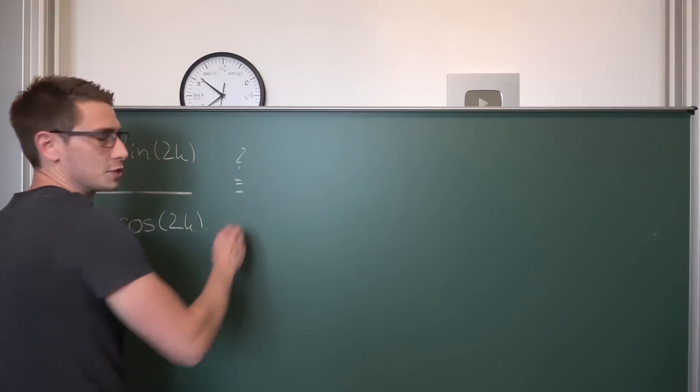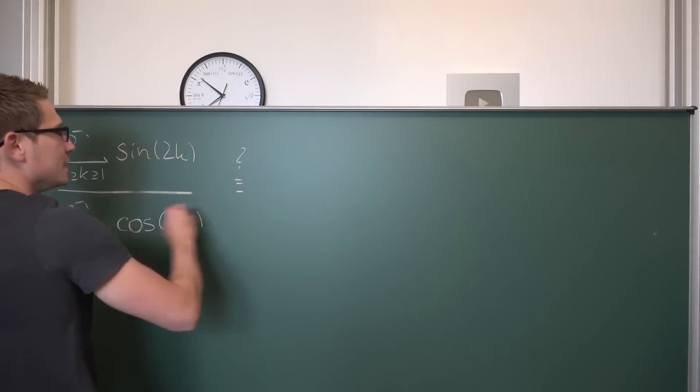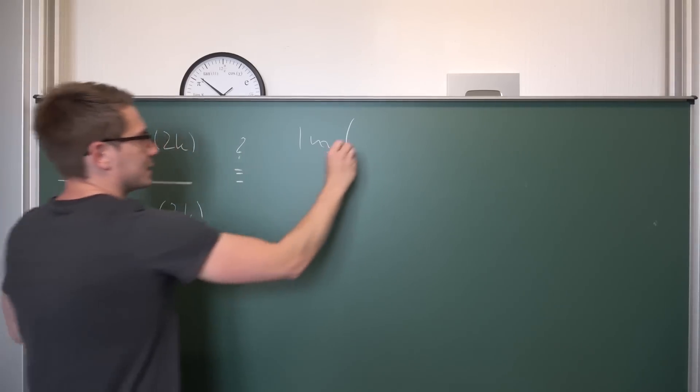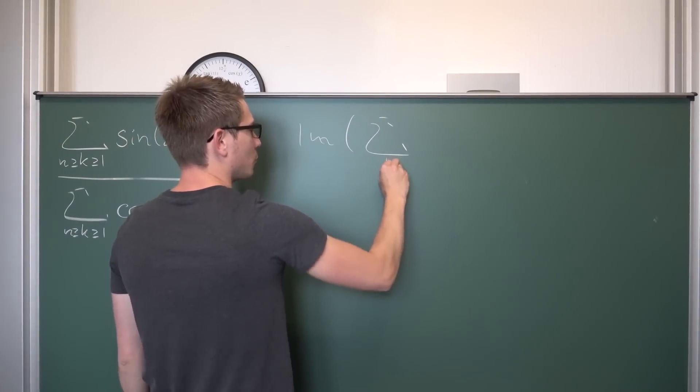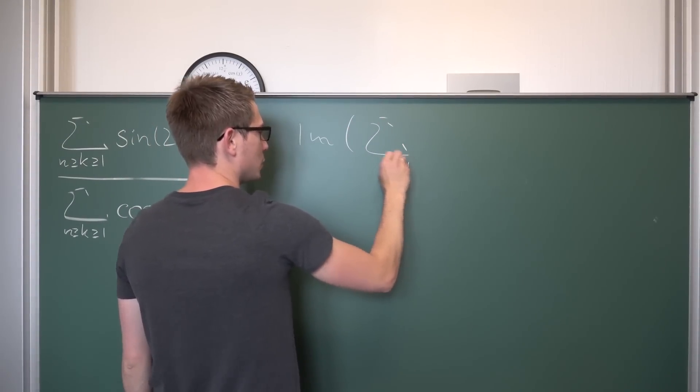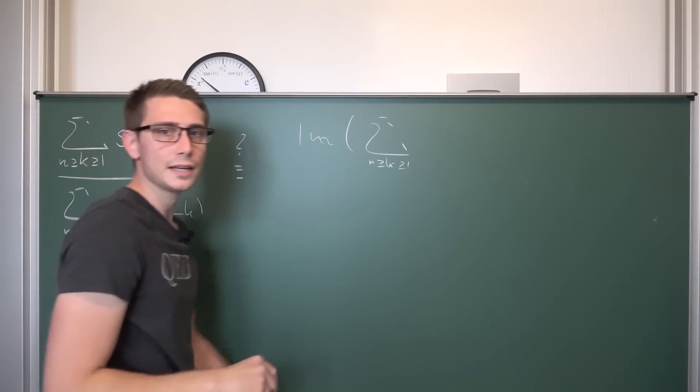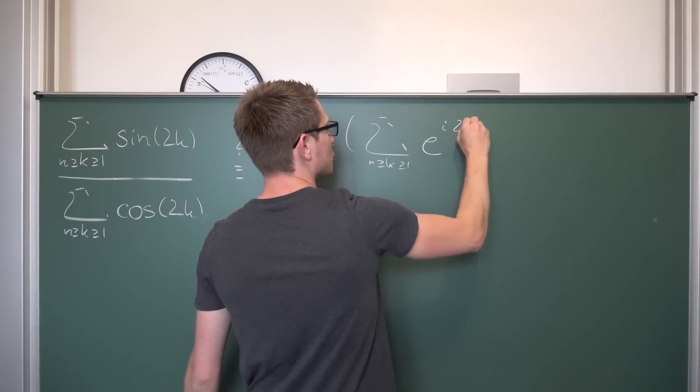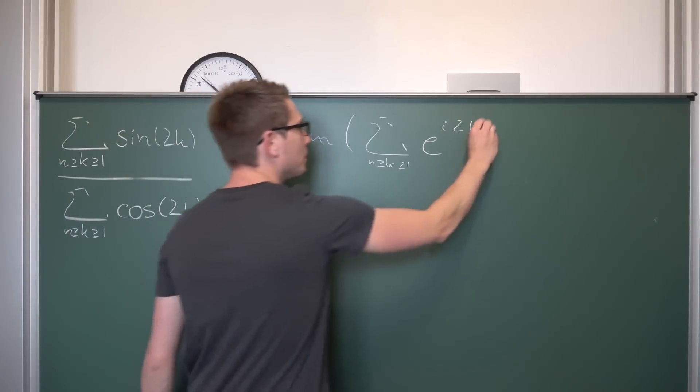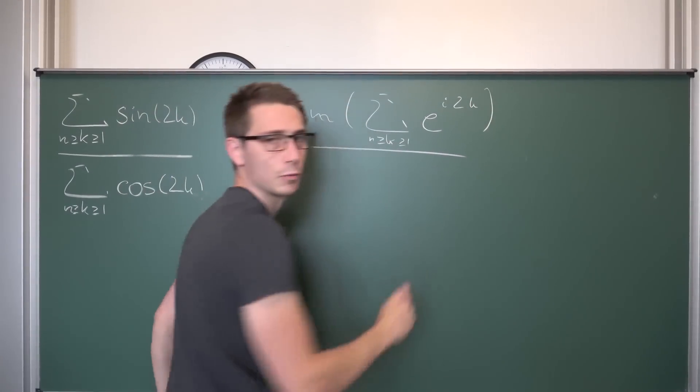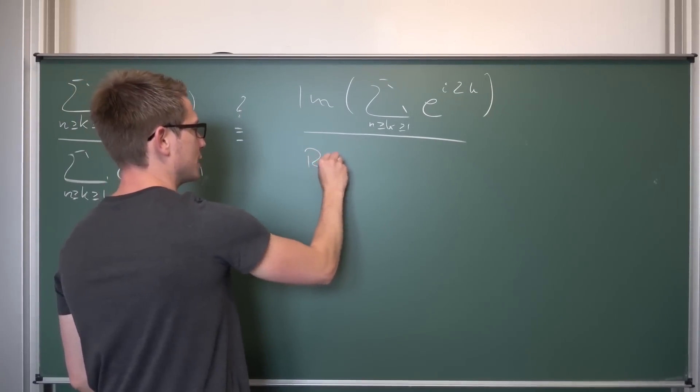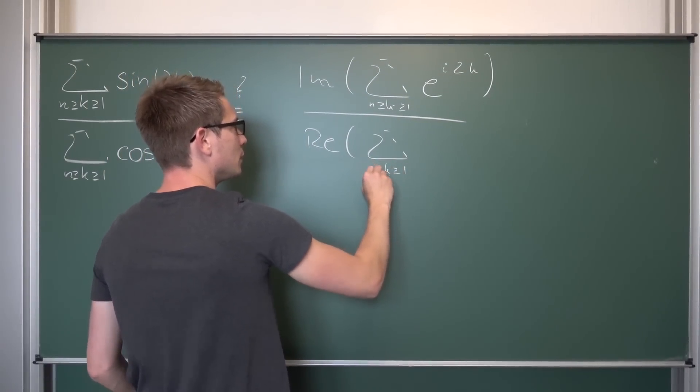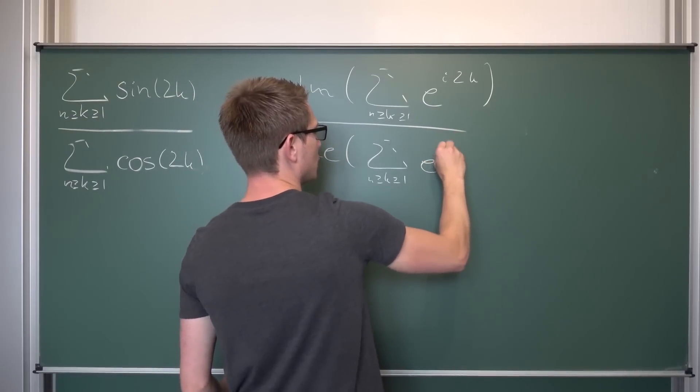So what we are going to arrive at as the first observation is that this right here in the numerator is just imaginary part of this sum where k is bounded between 1 and n, of sine of 2k in exponential form which is nothing but e^(i·2k). I hope you can see where this came from. Over and the same thing with the real part as the cosine. So the real part of the sum being bounded between 1 and n of e^(i·2k).